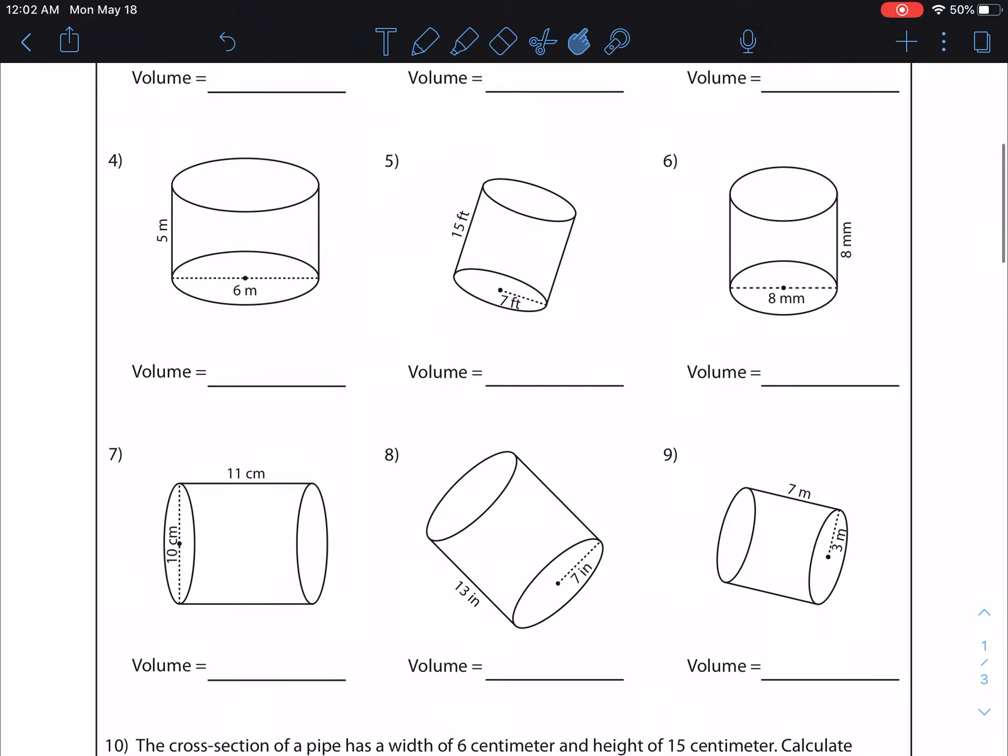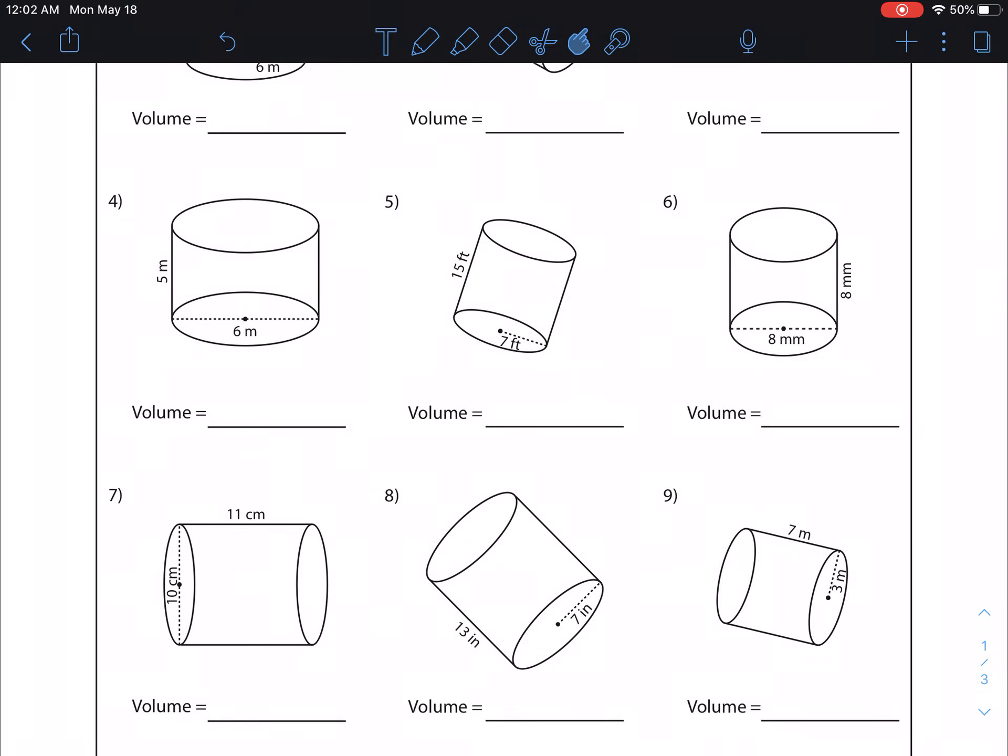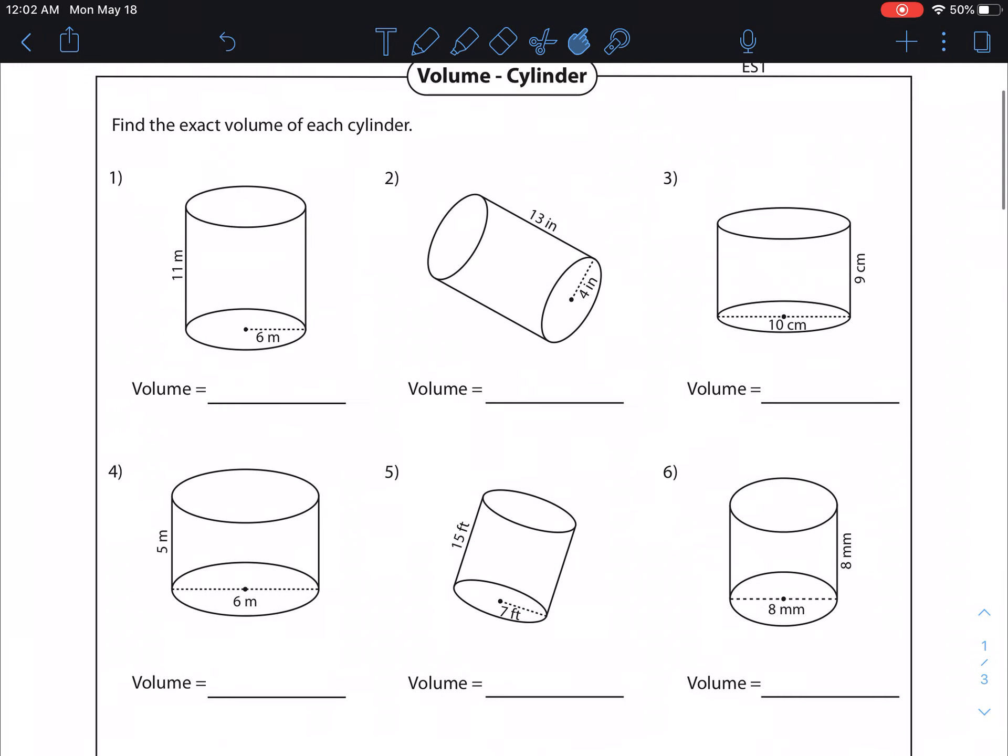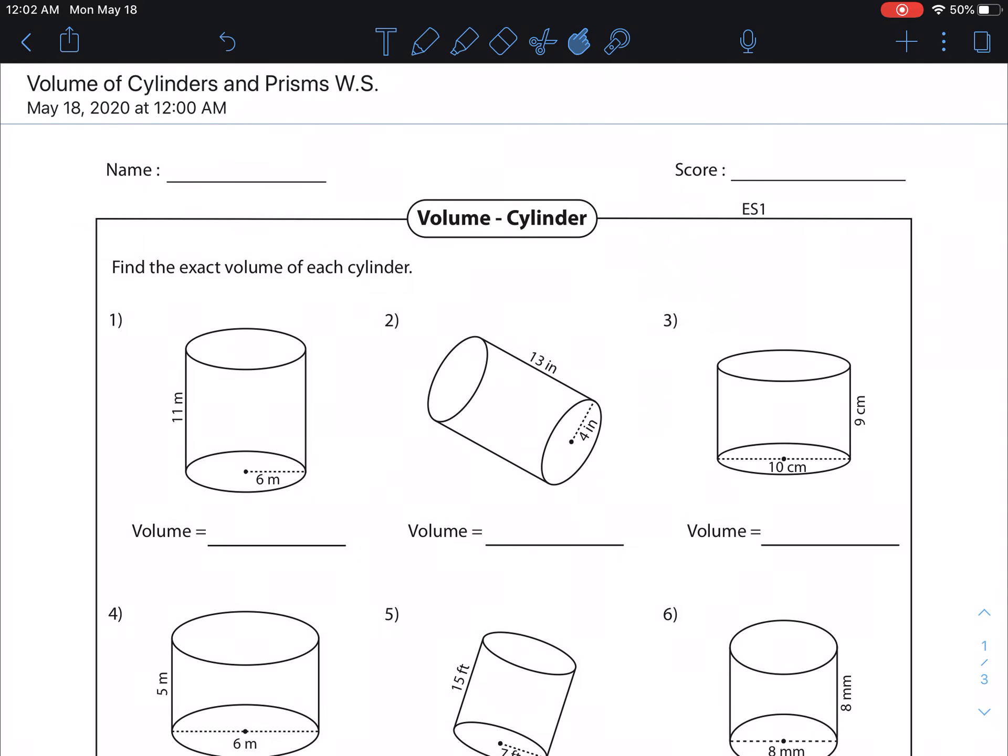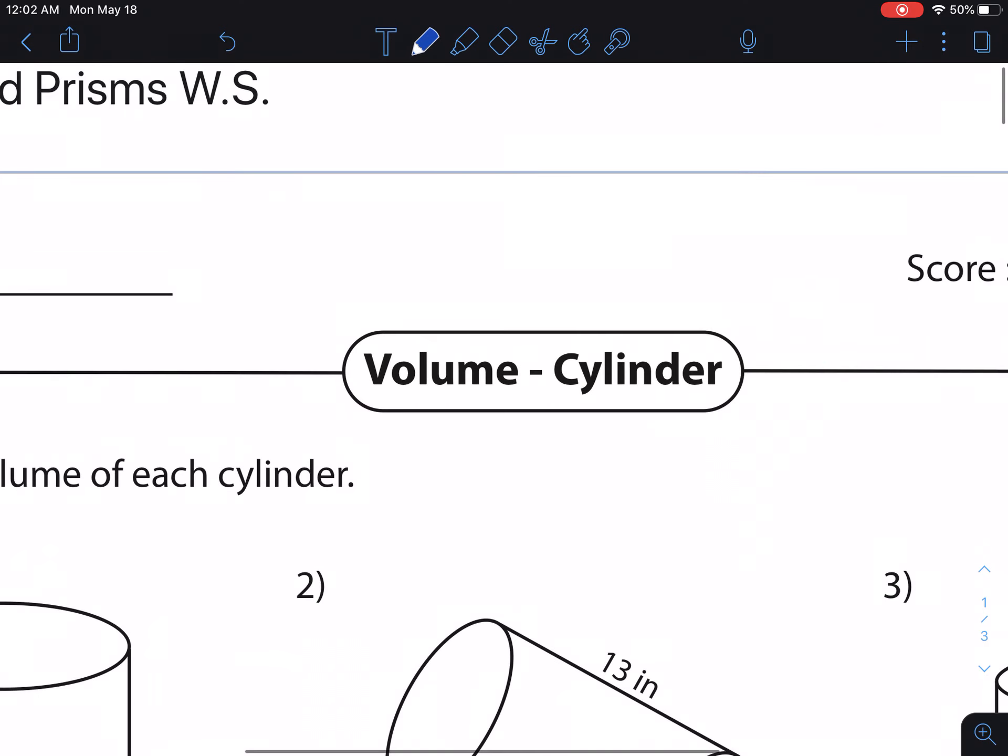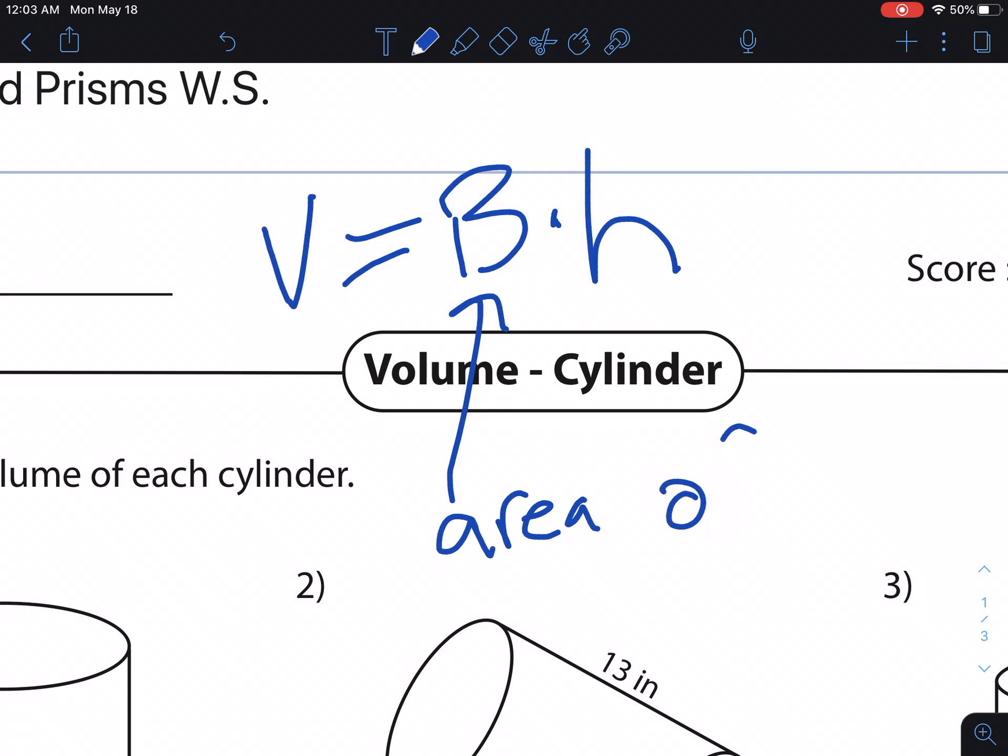And up here we've got cylinders. Now, the basic formula for all of these is the same. So I'm going to write that formula right up top here. The formula for cylinders and prisms for volume is this: V equals capital B times lowercase h. Now, the capital B is important. And the capital B refers to the area of the base shape. So the area of the base. And then this is the height.